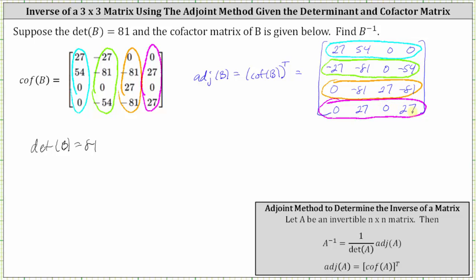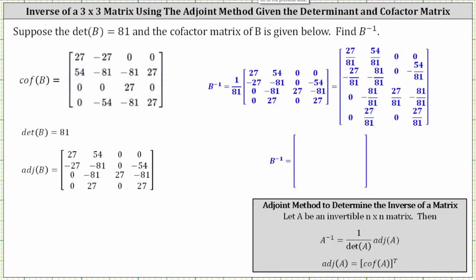Now that we have the determinant of matrix B and the adjoint of matrix B, we can find B inverse. B inverse is equal to one divided by the determinant of matrix B times the adjoint of B, which gives us one divided by 81 times the adjoint of B. Performing the scalar multiplication gives us the matrix shown, and now let's simplify the fractions.